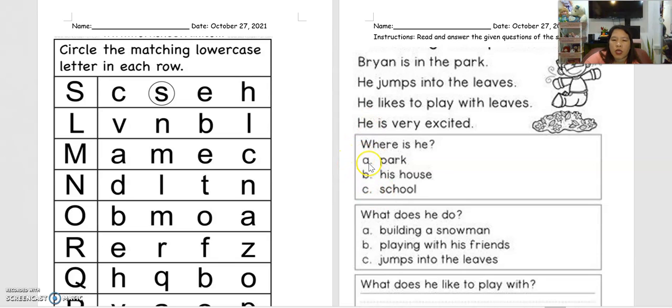Letter A: park, B: his house, C: school. So you have to think about your correct answer and circle around the letter. Next, what does he do? A: building a snowman, B: playing with his friends, C: jumps into the leaves. So you choose your answer.